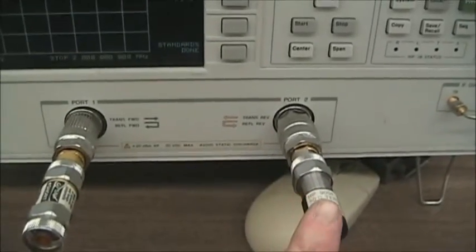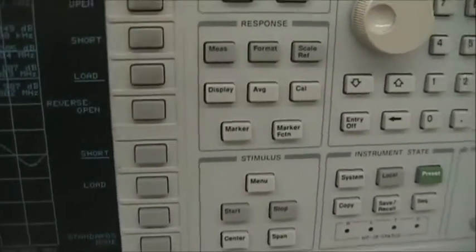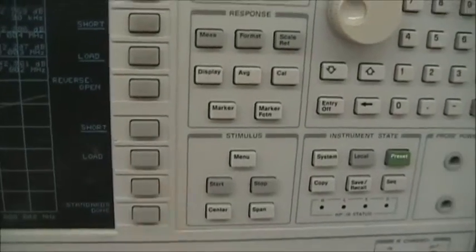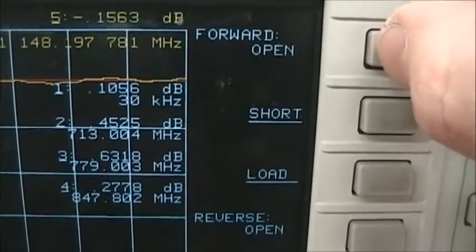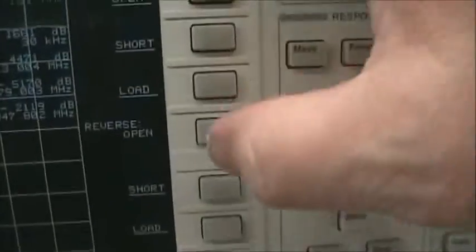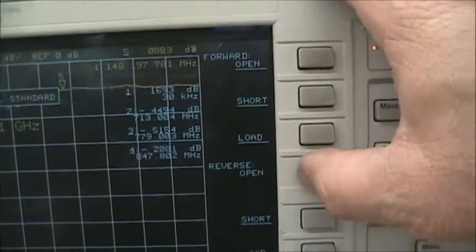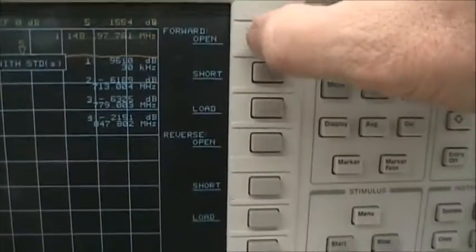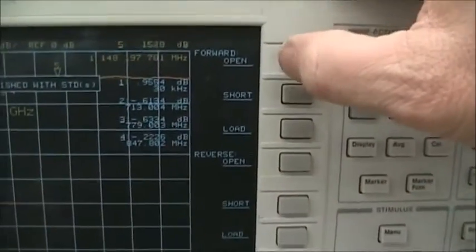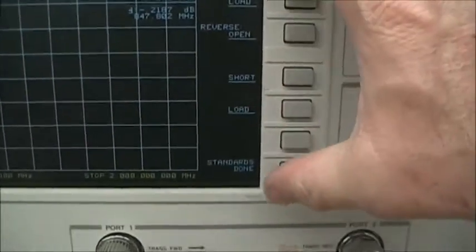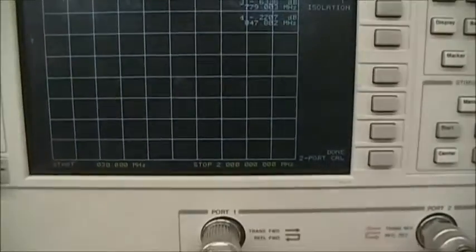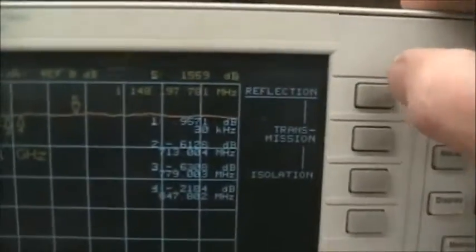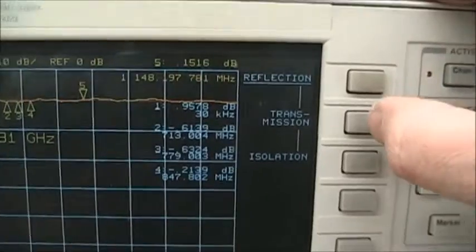Now the load is on port two, and the short is on port one. So, short for port one and load for point two. Open on port two. Now that the open, short, and load SOL have been done on both port one and port two, we can press the standards done. It's computing the coefficients, and the unit is ready to move on as we see the reflection is underlined. All of those standards are done.